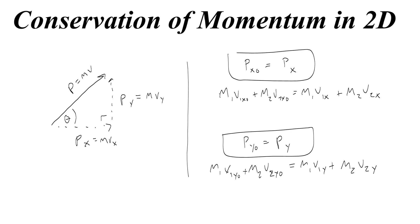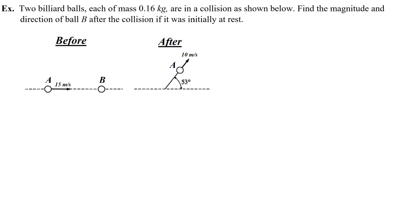At some point you'll come back together and try and recombine your momentum components, oftentimes simply to get a velocity and that's what we're going to do in a practice problem right here. Okay so here we have two billiard balls each of mass 0.16 kilograms and they are in a collision as shown below. We want to find the magnitude and direction of ball b after the collision if it was initially at rest. So this ball is going to be moving somewhere along some angle with a velocity which I'm going to call vb and we need to find both the angle and magnitude of that velocity.